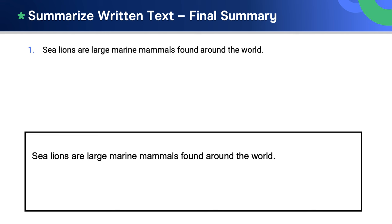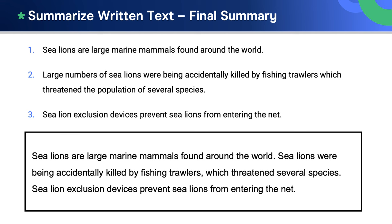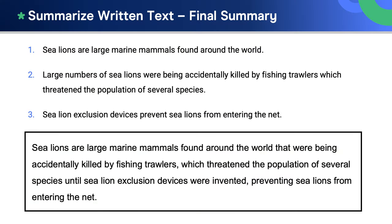So now we have three simple sentences. Let's see if we can combine them together to make one complex but clear single sentence summary of the text. Here are our three sentences, and now let's link them using conjunctions, relative pronouns, and other linking devices such as -ing endings. How about this: sea lions are large marine mammals found around the world that were being accidentally killed by fishing trawlers, which threatened several species until sea lion exclusion devices were invented, preventing sea lions from entering the net.